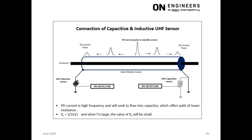This slide is about the connection of UHF PD sensors. The UHF sensors can be inductive or CT type, or of capacitive type, similar to the HFCT. These UHF CTs are connected to the earthbreak of the cable termination, available at both ends of the cable. A capacitor exhibits lower impedance as frequency increases, so PD current, which is of high frequency, would prefer to flow into capacitors because of their lower impedance.